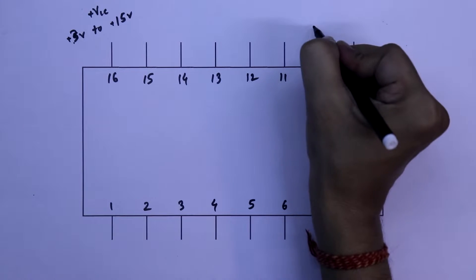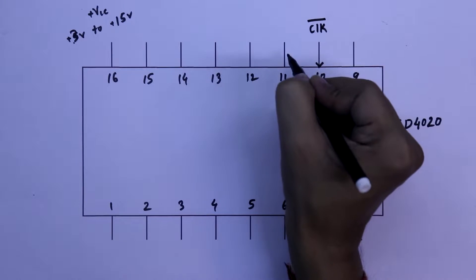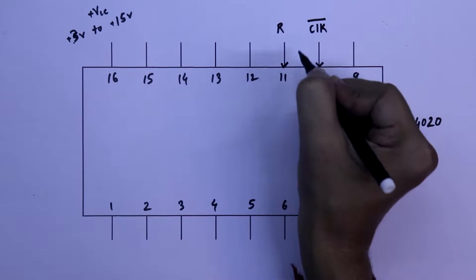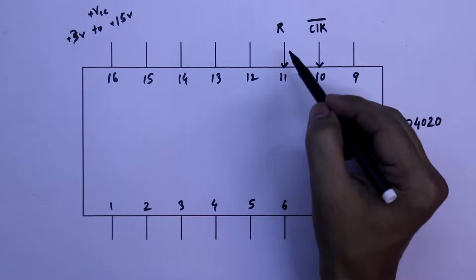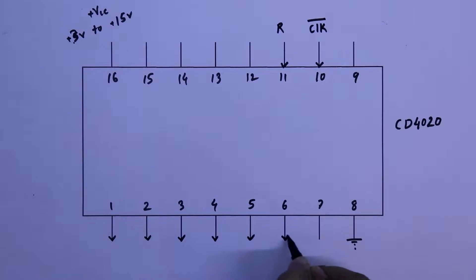Pin number 10 is clock input pin and it is active low. And pin number 11 is reset pin. And this is active high. So whenever we make this pin high, the IC will reset. And these are the output pins.